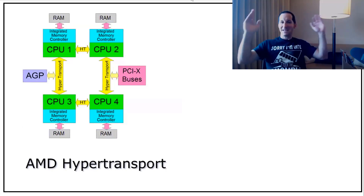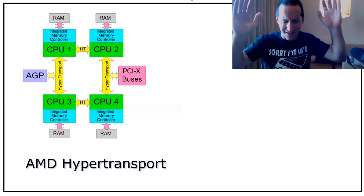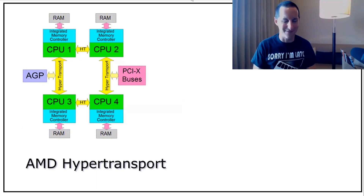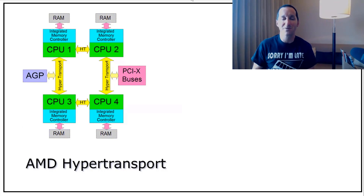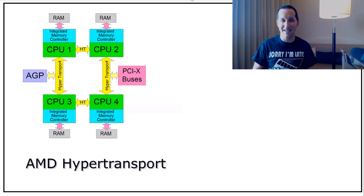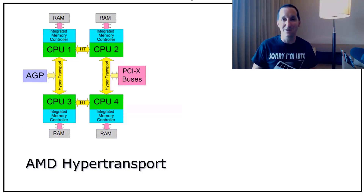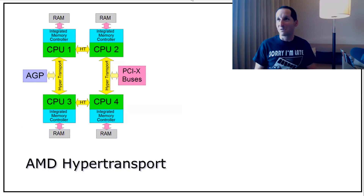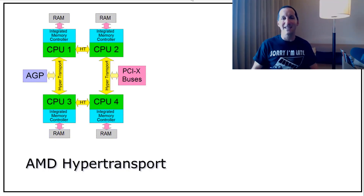AMD — saviors of the universe, not a sponsored post — invented a thing called HyperTransport, which was the concept of attaching some memory directly to the CPU such that CPUs could at least access a subset of memory incredibly fast. They also improved the communication lines between those CPUs using this thing called HyperTransport.